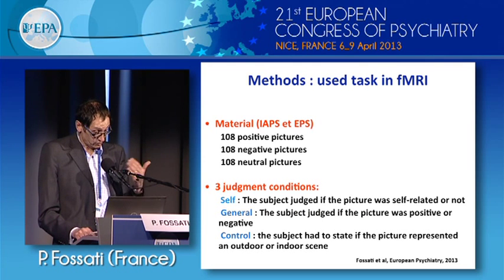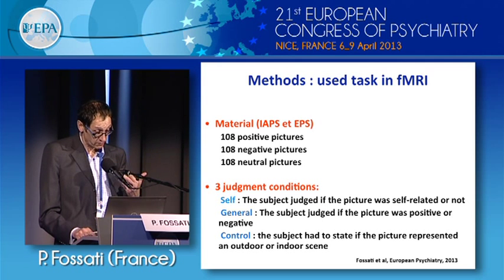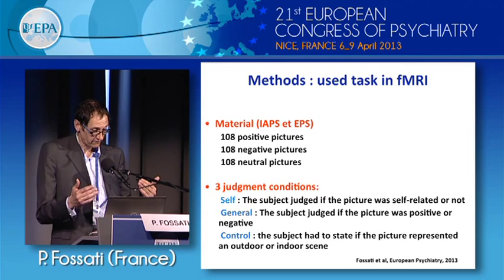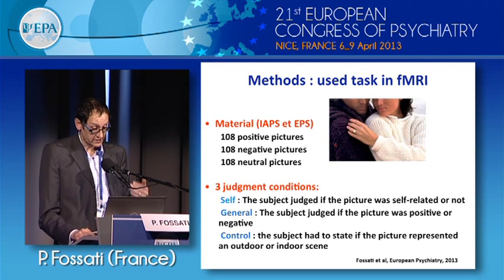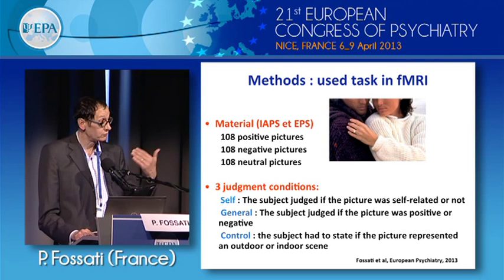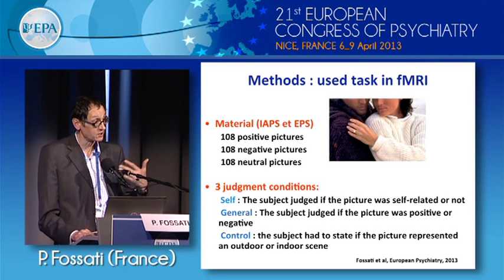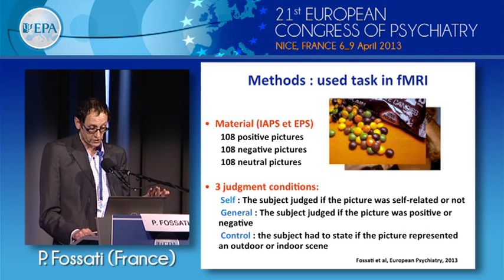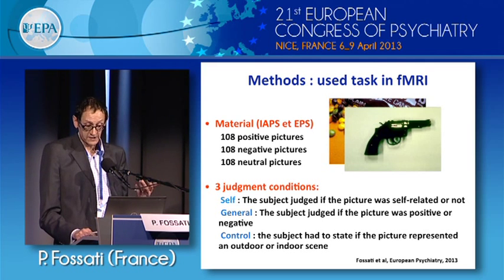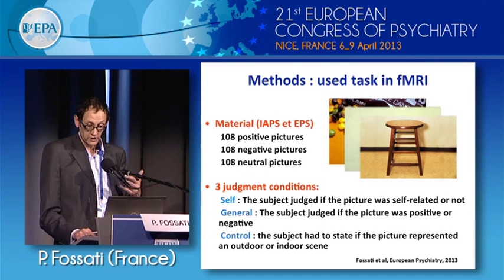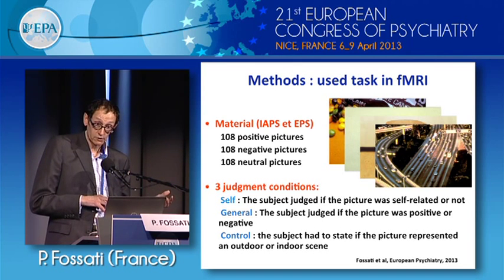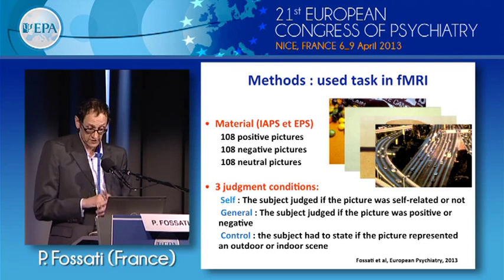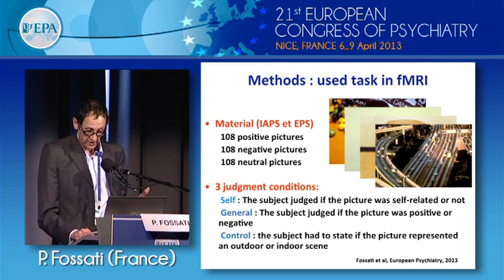During the scanning session, participants were asked to make three types of judgments — self, general, and control — while viewing pictures. For the self-condition, they had to say whether the picture related to something personal. For the general condition, they judged whether it was a positive or negative emotional picture. There were also neutral pictures, and participants were asked whether the picture depicted something internal or external.